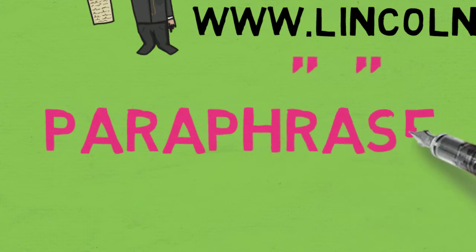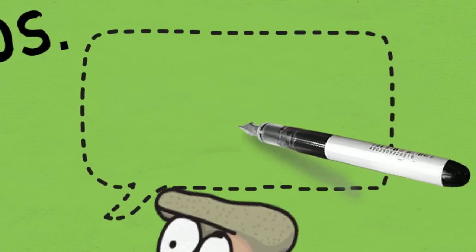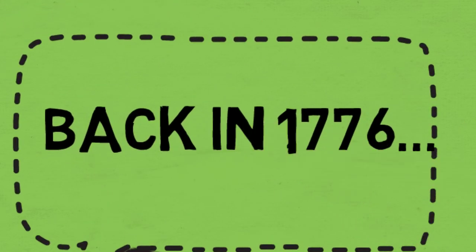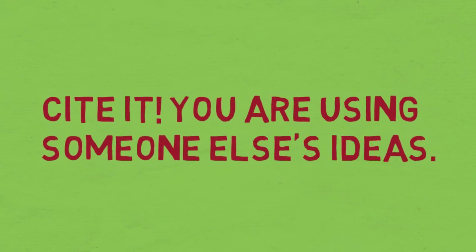Sometimes writers also paraphrase, which means to put something in your own words. This is useful when there is a large amount of information and a quote would be too long. You should still cite this information because even if you are using your own words, you are still using someone else's ideas.